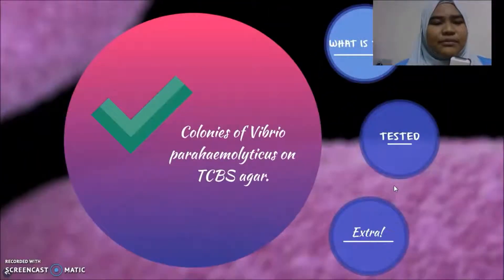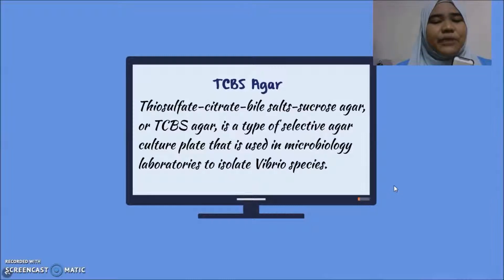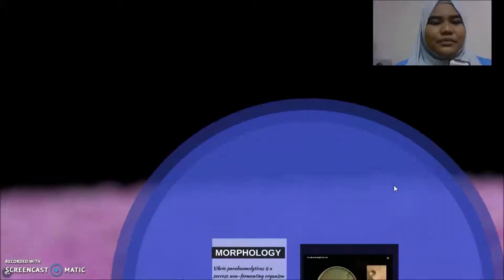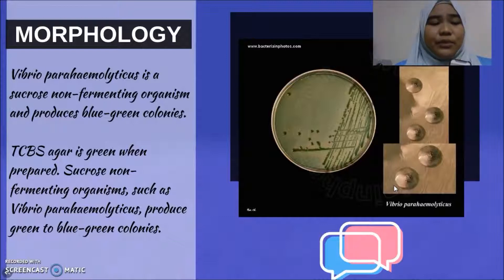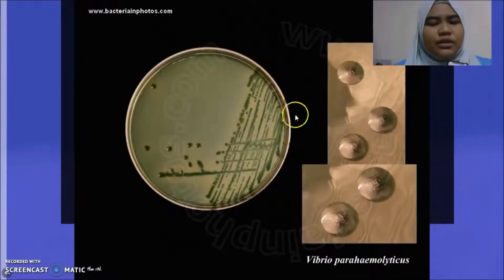Next, in the lab: the colonies of Vibrio parahaemolyticus on TCBS agar. What is TCBS? TCBS agar is thiosulfate citrate bile salt sucrose agar. TCBS agar is a type of selective agar culture medium that is used in microbiology laboratories to isolate Vibrio species. Vibrio parahaemolyticus is a sucrose non-fermenting organism and produces blue-green colonies. TCBS agar is green when prepared, and sucrose non-fermenting organisms such as Vibrio parahaemolyticus produce green to blue-green colonies. As you can see here, the blue-green colonies.